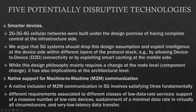Next is smart devices. 2G, 3G, 4G cellular networks were built under the design premise of having complete control at the infrastructure side. We argue that 5G systems should drop this design assumption and exploit intelligence at the device side within different layers of the protocol stack — for example, by allowing device-to-device connectivity or by exploiting smart caching at the mobile side. While this design philosophy mainly requires a change at the node level, it also has implications at the architectural level. The last is native support for machine-to-machine, M2M, communication. A native inclusion of M2M communication in 5G involves satisfying three fundamentally different requirements: support of a massive number of low data rate devices, sustainment of minimum data rate in virtually all circumstances, and very low latency data transfer.